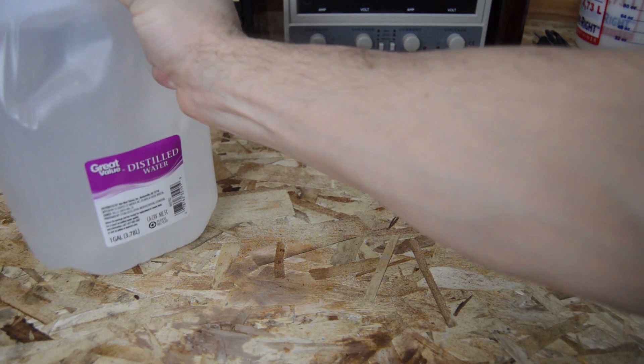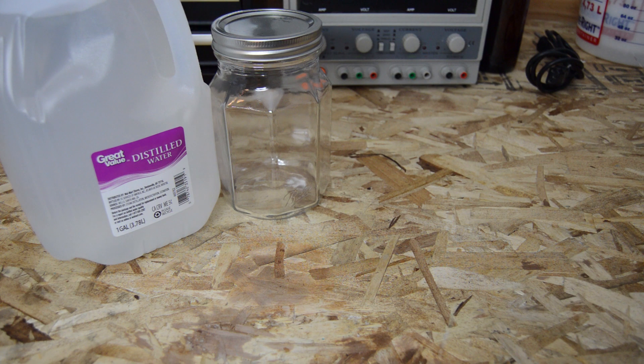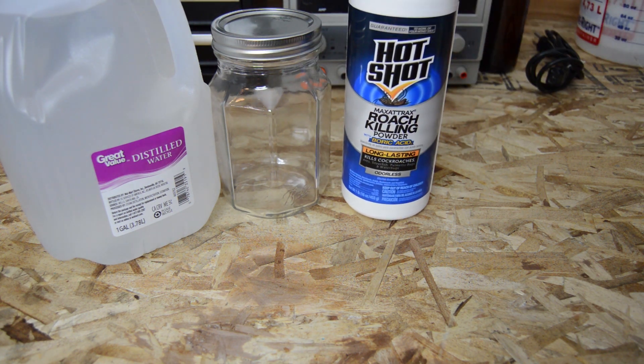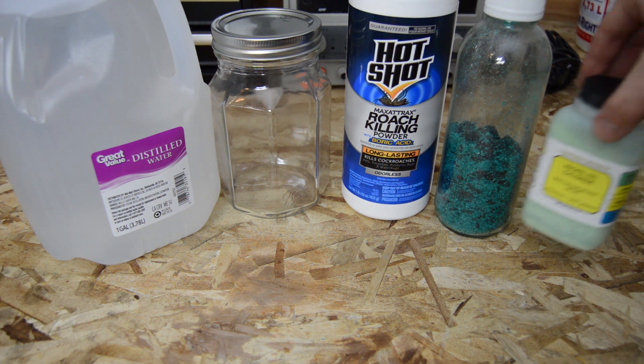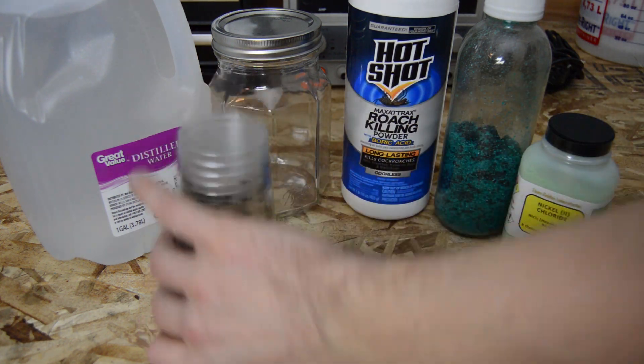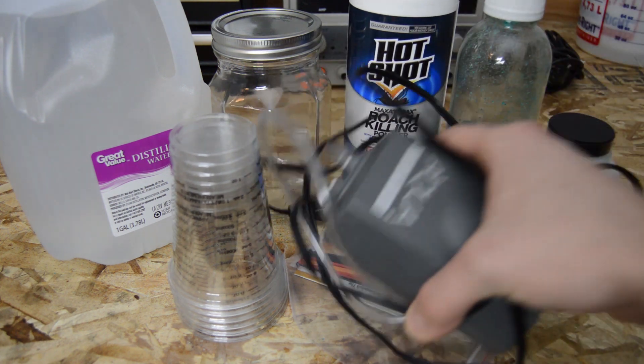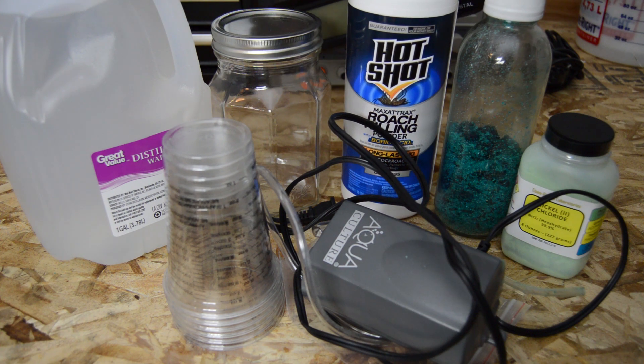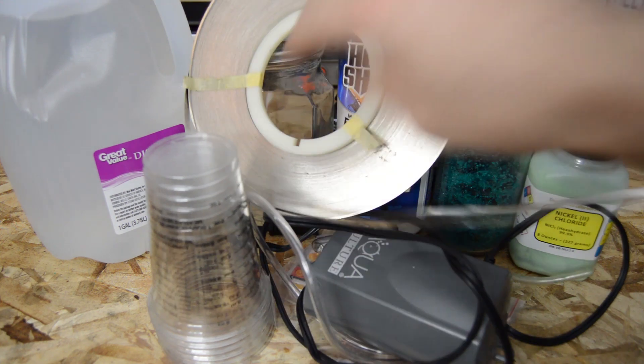Here's what you're going to need: distilled water, a Mason jar, boric acid, nickel sulfate, nickel chloride, some measuring cups, maybe some measuring spoons, not really an aquarium pump but I'll explain that later, a postal scale if you have one, and a little bit of nickel metal.